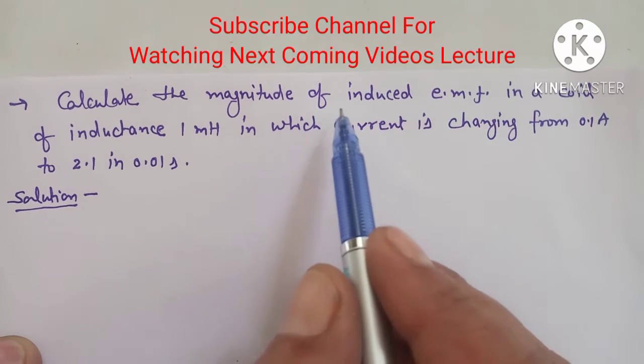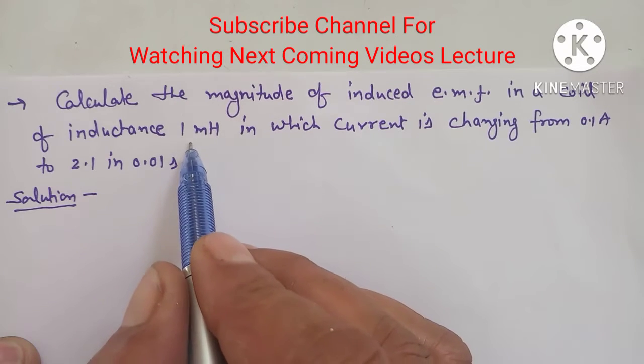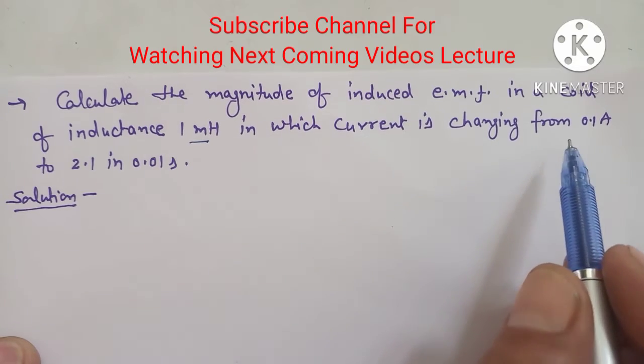Calculate the magnitude of induced EMF in a coil of inductance 1 mH in which current is changing from 0.1 ampere to 2.1 ampere.